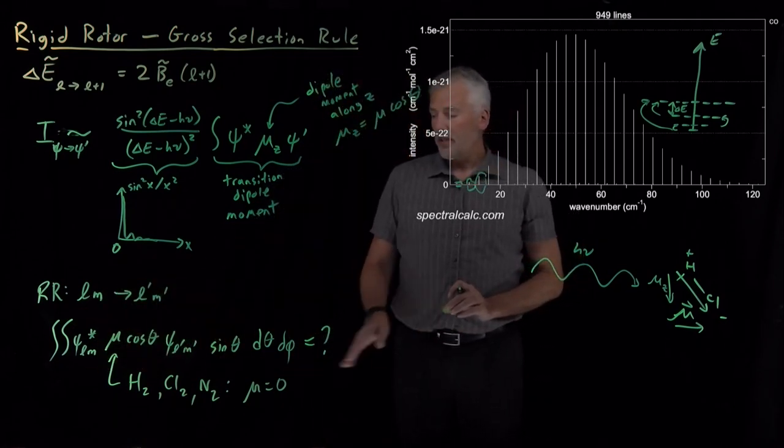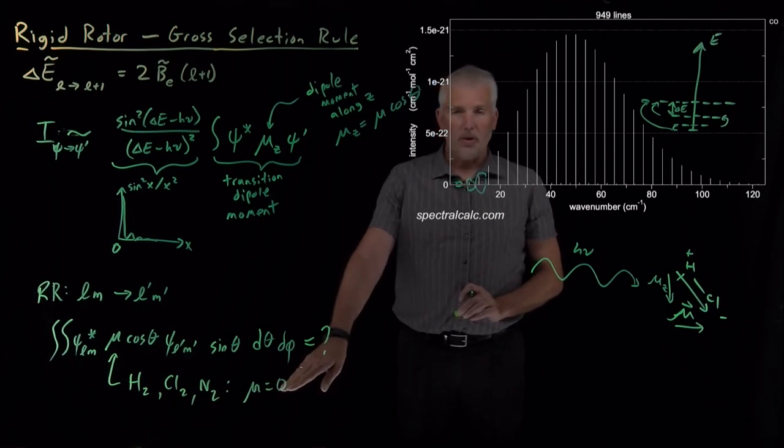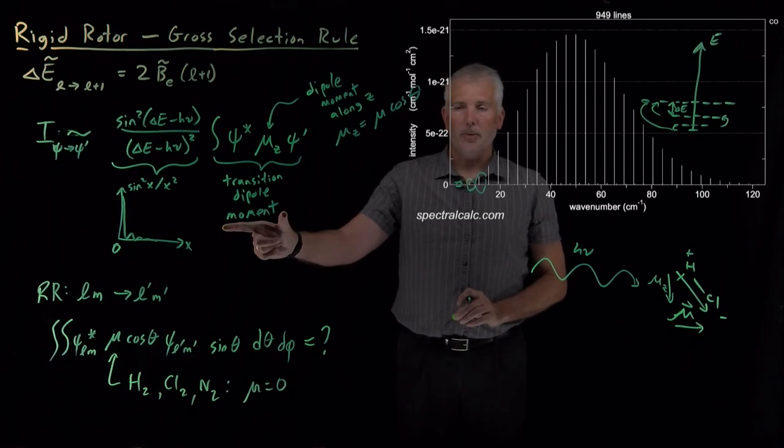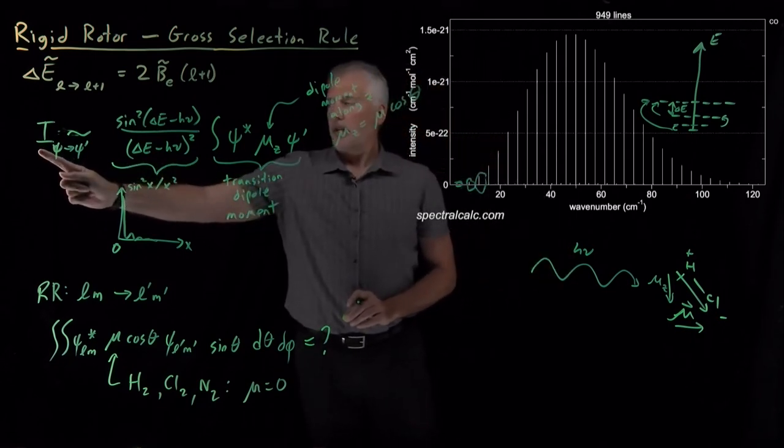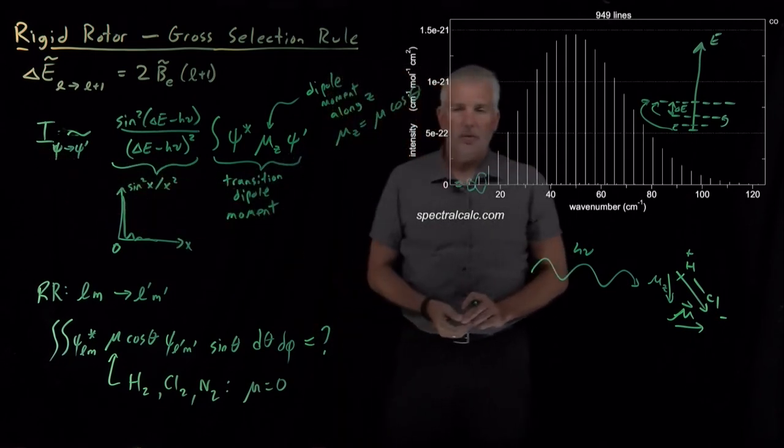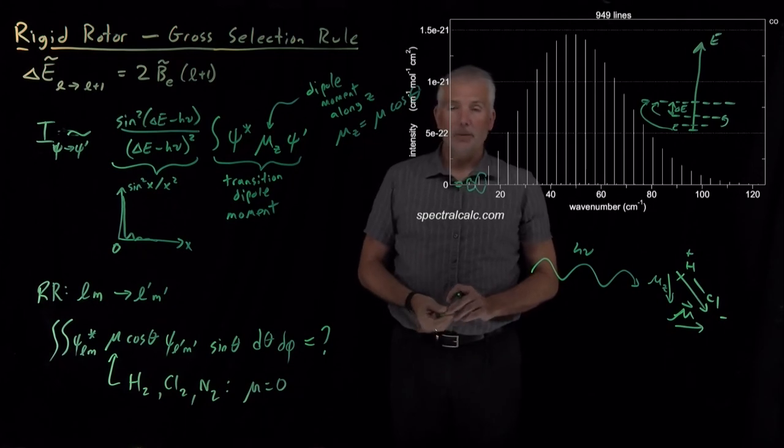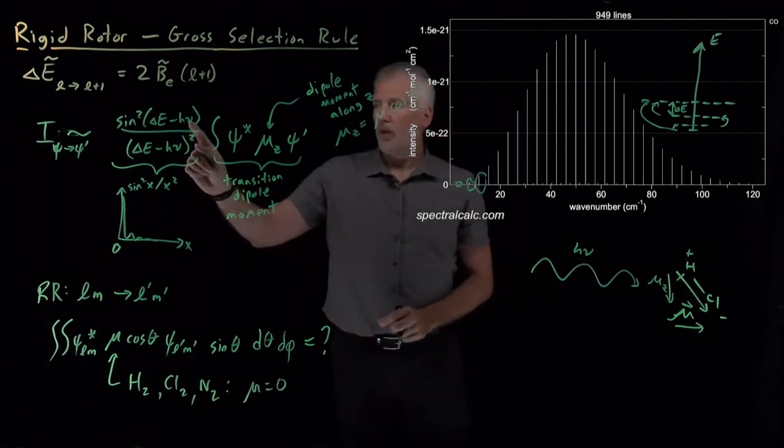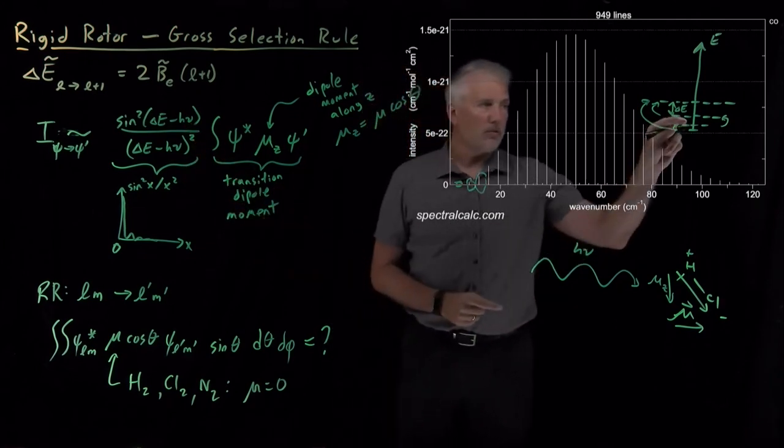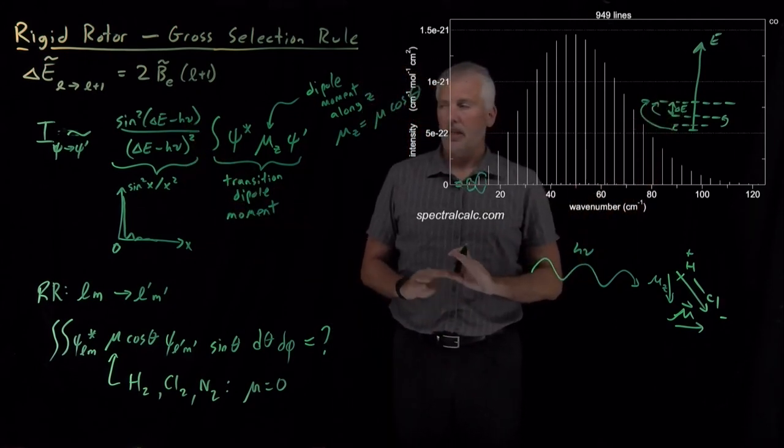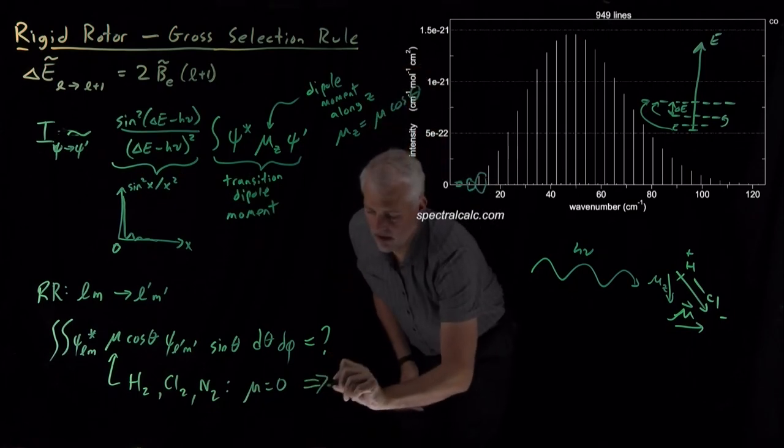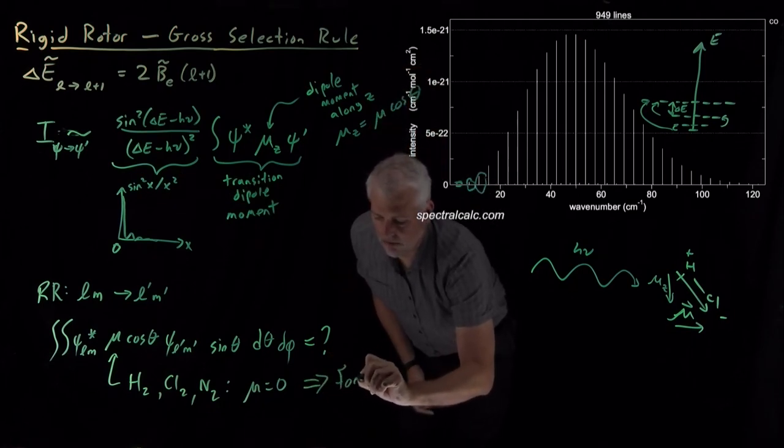So what that means is for those nonpolar homonuclear diatomic molecules, this whole transition dipole moment works out to be zero. This quantity I works out to be zero, and what that tells us is light will not be absorbed, regardless of what the orientation of the molecule is, regardless of what the frequency of light is, regardless of which transition we're trying to make. This quantity is zero, so that's called a forbidden transition.